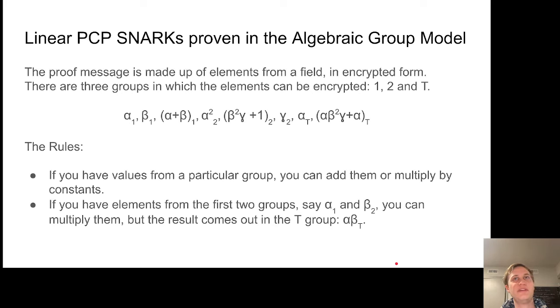So what is a linear PCP SNARK? I won't talk about the low-level details of how the cryptographic primitives are implemented, just give a high-level overview. Linear PCP SNARKs are implemented with something called a bilinear pairing for some cryptographic groups. All the messages sent between the prover and verifier are elements of a particular finite field, but encrypted in a certain way such that only certain operations can be done with them. We have three groups labeled 1, 2, and T, the target group, which represent three ways of encrypting these field elements.